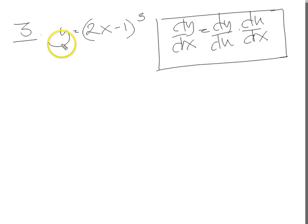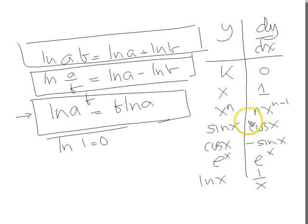Okay, number three then. We've got y equals something cubed, haven't we? 2x minus 1 bracket cubed. Something cubed. The cube is on the table. Here's x cubed, something cubed.